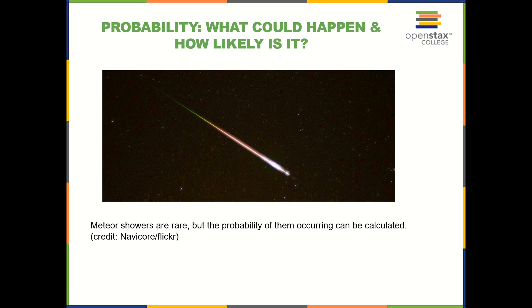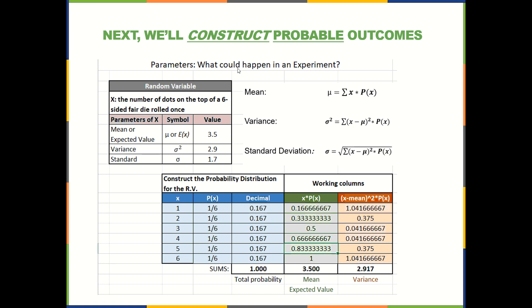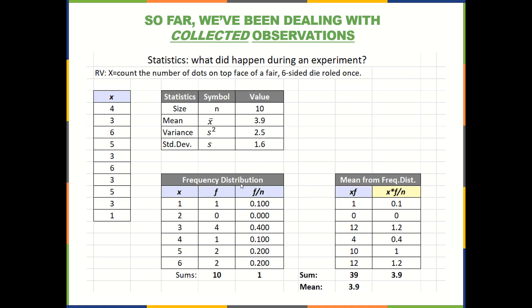Basically, probability is what could happen and how likely it is. So far, we've been dealing with collected observations, and now we're going to see a difference between collected observations and what is really supposed to happen, or what we consider actual probability, based on what could happen. We'll see some similar tables — before, we saw frequency distributions after we collected data and organized it into a table, and we could have some relative frequencies, which can be viewed as probabilities within that particular collection of data. We calculated things like the mean, the variance, and the standard deviation, using sample symbols from some population.